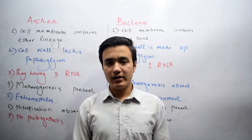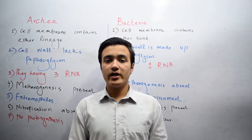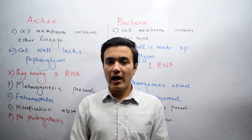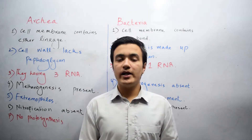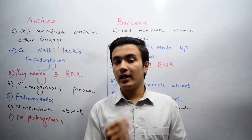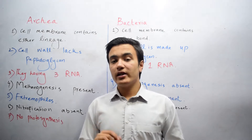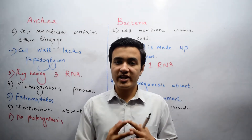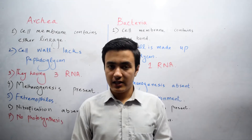In 1959, a scientist Robert Whittaker classified all living organisms into five kingdoms: Kingdom Plantae, Kingdom Animalia, Kingdom Fungi, Kingdom Protista, and Kingdom Monera. But later, Kingdom Monera was divided into two major groups: Archaea and Bacteria.